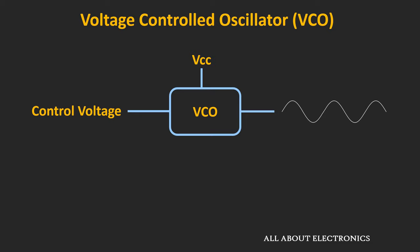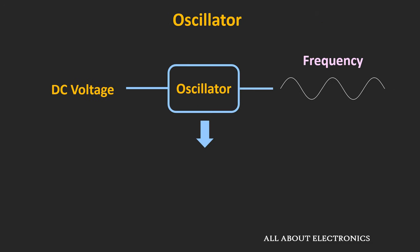As its name suggests, it is an oscillator whose frequency can be controlled by the external voltage. In the conventional oscillator, the frequency of oscillation can be selected by passive components like resistors, capacitors, and inductors. By changing the values of these passive components, it is possible to change the oscillation frequency.